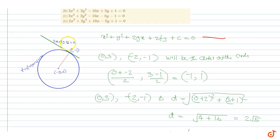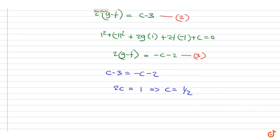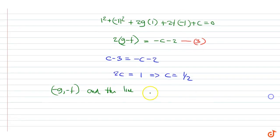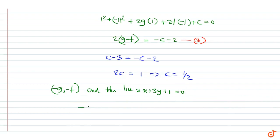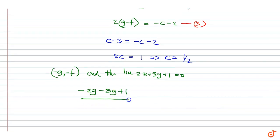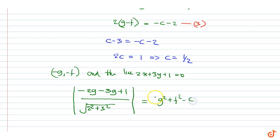Now, since 2x + 3y + 1 = 0 is a tangent to the circle, the distance between the center of the circle (-g, -f) and the straight line should equal the radius. The distance between (-g, -f) and the line 2x + 3y + 1 = 0 is given by |(-2g - 3f + 1)| / √(2² + 3²), and this equals the radius √(g² + f² - c).